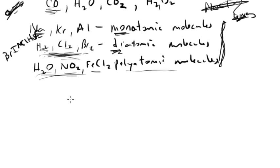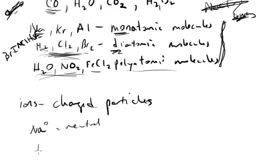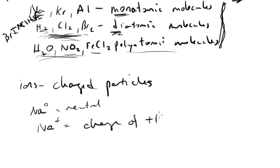What about ions? Well, ions are charged particles, whether they be atoms or molecules or anything like that. So an example would be sodium. Sodium, normally, if there's nothing written up here, it's just sodium zero, it's neutral. Let's say we wrote Na+. Well, this would mean it has a charge of plus one.